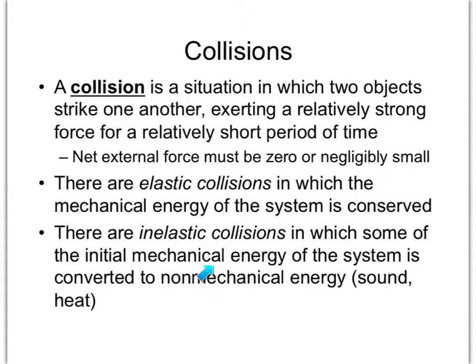Some of the initial mechanical energy is not conserved — you don't get it back. It turns into things like sound, heat, light, or the work done bending metal into a different shape. We're going to look at inelastic collisions first, then elastic collisions. These are the two main types.